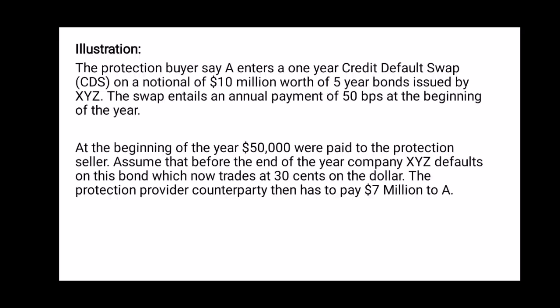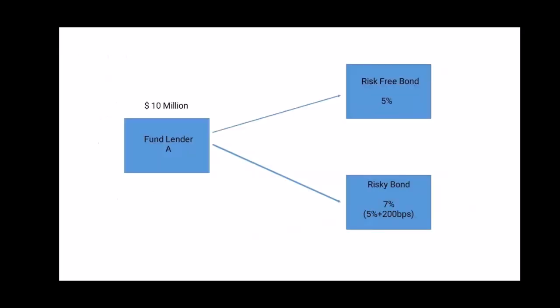Let us understand this concept using an example. Assume that there is a fund house A and they want to invest 10 million dollars. One option is to invest in a risk-free bond — risk-free bonds are issued by the sovereign and there is no risk of default. The second option is to invest in a risky bond, which yields more — 7%, which is 200 basis points more than the risk-free rate.